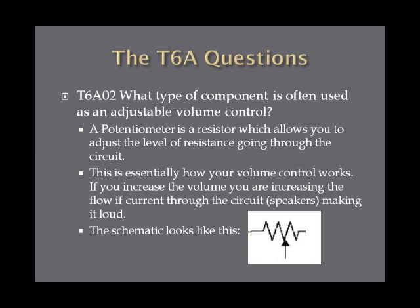What type of component is often used as an adjustable volume control? A potentiometer is the answer on the exam. A potentiometer is a resistor which allows you to adjust the level of resistance in the circuit. This is essentially how your volume control works on your stereo or radio. Increasing the volume reduces the resistance, making it louder, and increasing the resistance makes it softer. The schematic looks like the resistor's sharp-edged squiggly line with an arrow pointing at it, indicating it's variable.